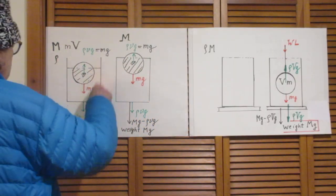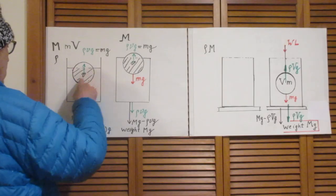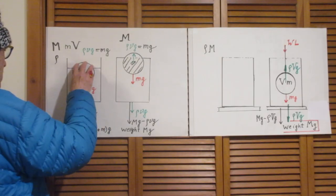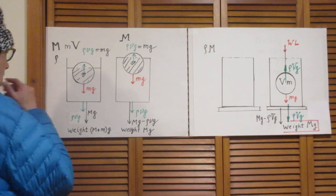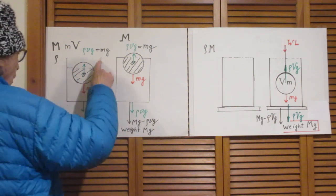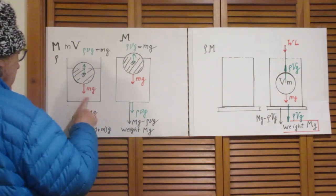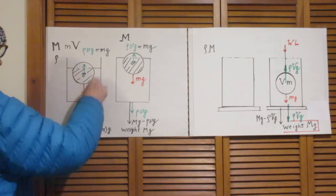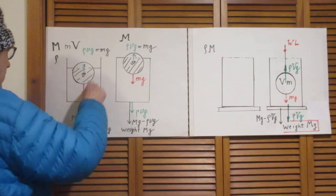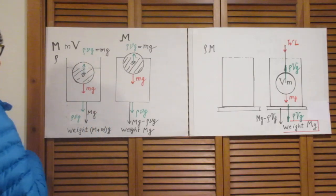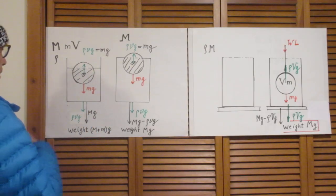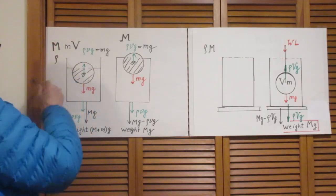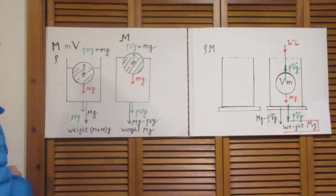I have here a container and there is liquid in the container — it is not filled to the brim. This object is not there yet. The mass of the container plus the liquid inside is capital M. I put this whole thing, the liquid and the container, on a bathroom scale and the bathroom scale will indicate Mg newtons. g is the gravitational acceleration.